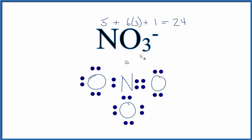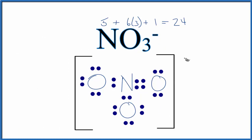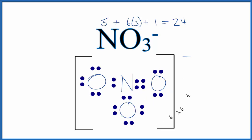To give nitrogen an octet, we form a double bond with one of the oxygens. Now everything has 8 valence electrons. We put brackets around the structure and add the negative charge. This is a good Lewis structure for NO₃⁻. You might ask if it matters where we put the double bond — and it does in a way. We have resonance structures: the double bond could go on any of the three oxygens. So there are three resonance structures, and in reality the Lewis structure is an average of all three.